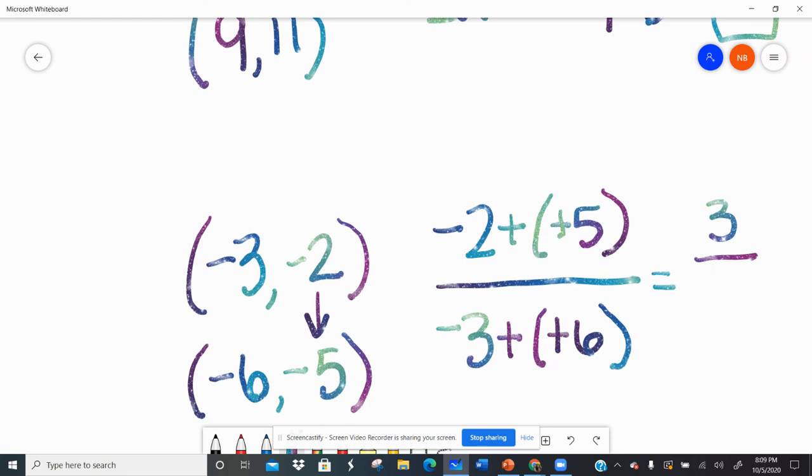Again, different signs, so I subtract. Six minus three is three, and my answer is positive, so I leave it like that. And again, three divided by three is one. So I have a slope of one. I go up one over one, up one over one, up one.